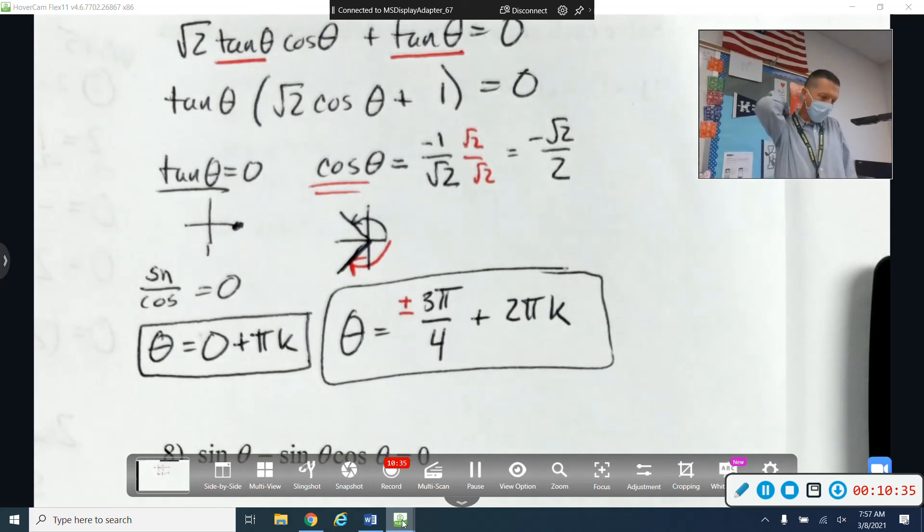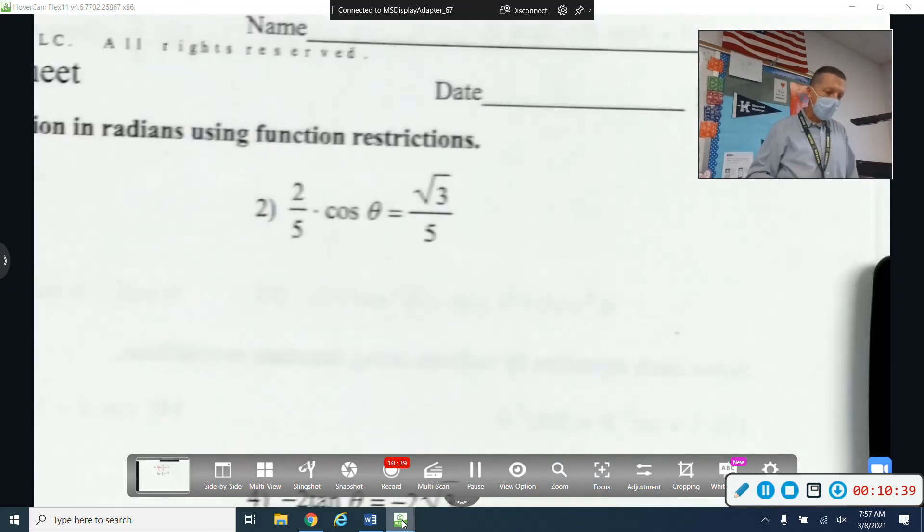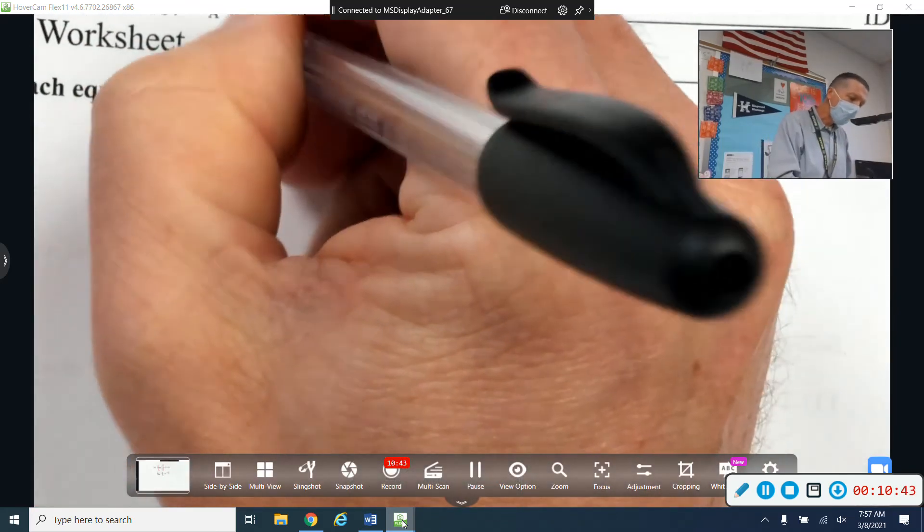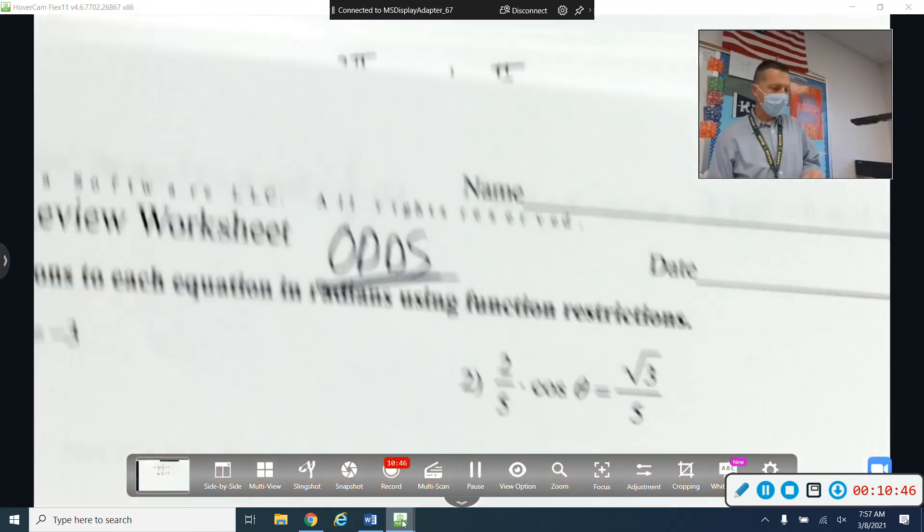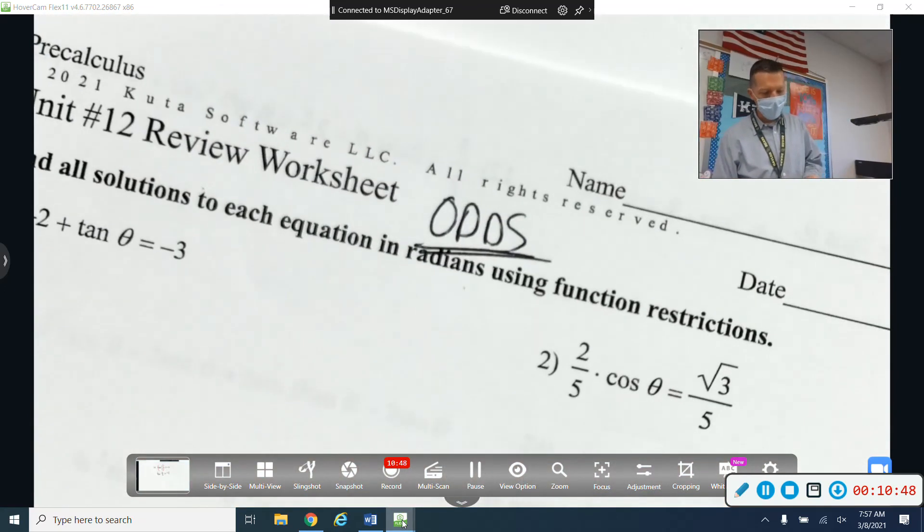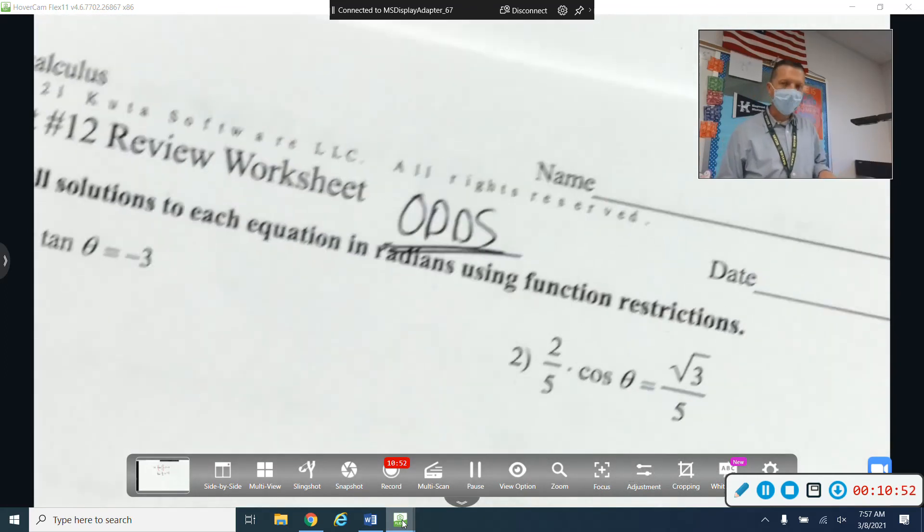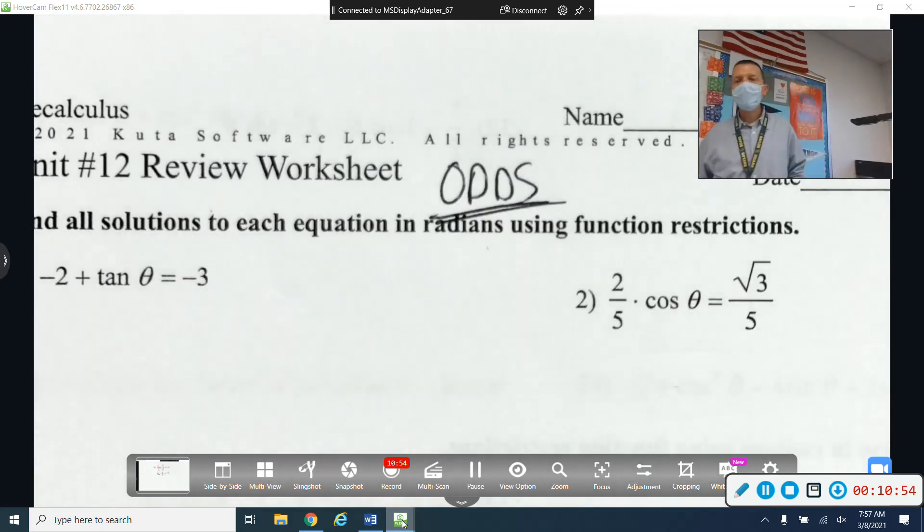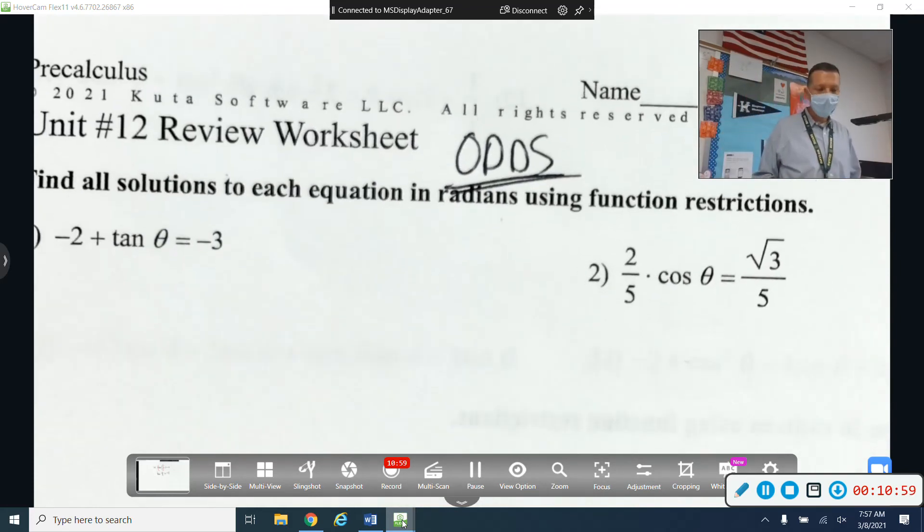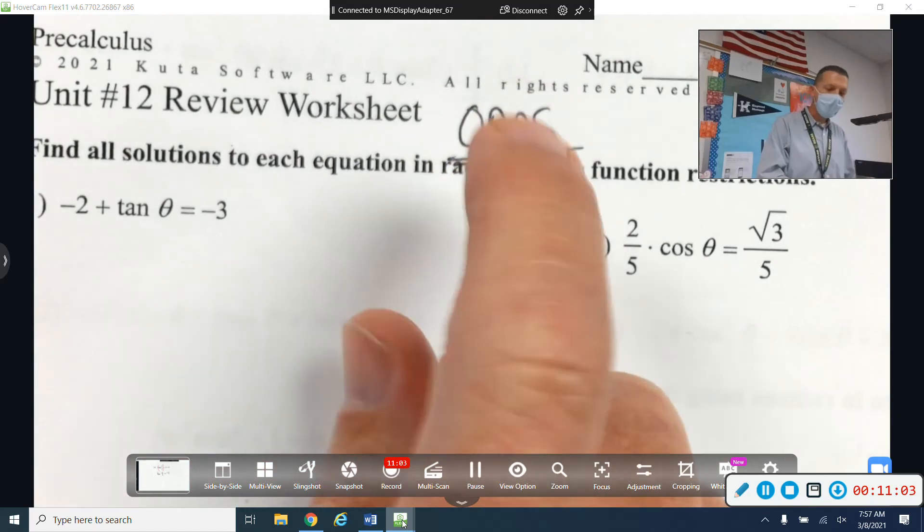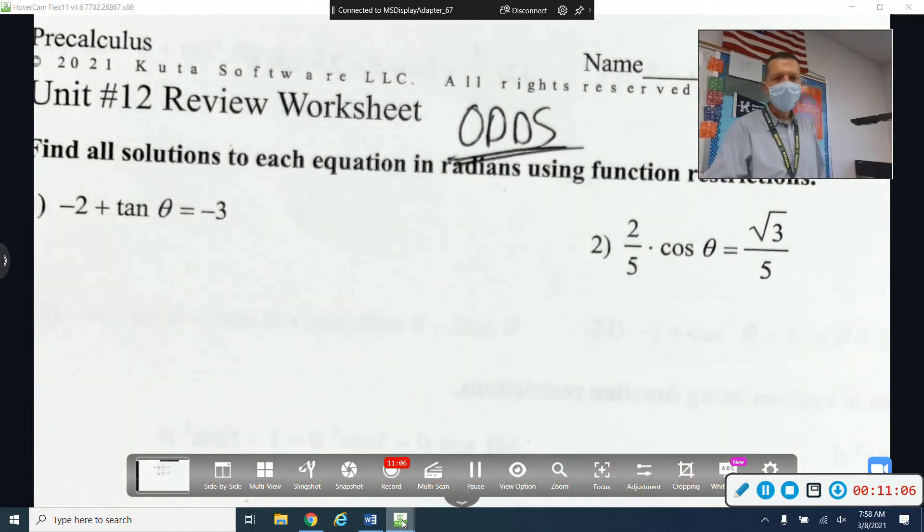All right. So your assignment today is the rest of worksheet five, 10 problems. If I haven't, I don't know that I've said it yet in here. The review worksheet is going to just be odds because it's kind of long. Again, it's tomorrow's assignment, but if you're peeking ahead, it's 30 questions. So let's just say it's the odds. We're not stuck doing a ton of problems. Besides, we're repeating ourselves now anyway. So we've got lots of practice. So if you're looking ahead to tomorrow's assignment, it will just be the odds. Thank you.